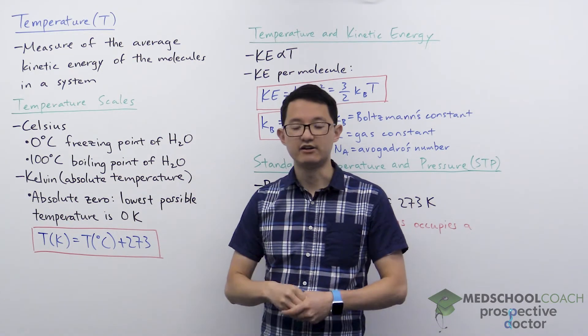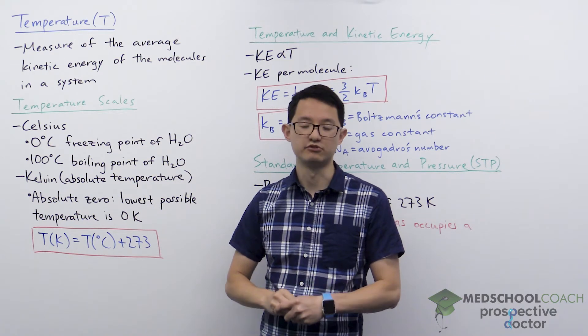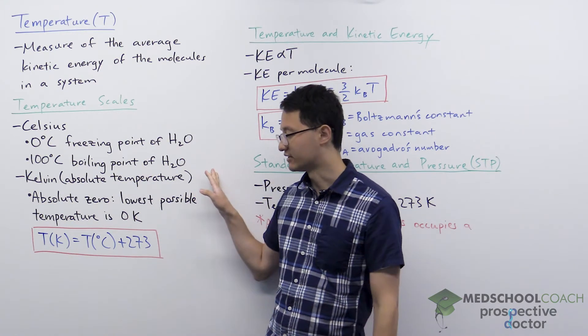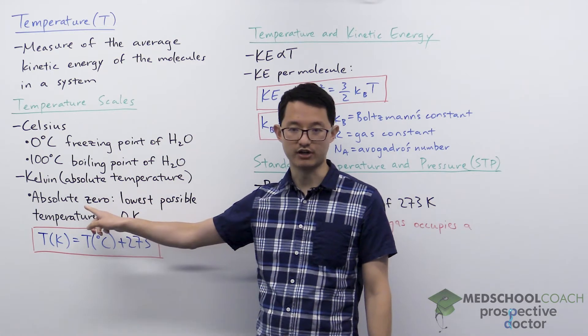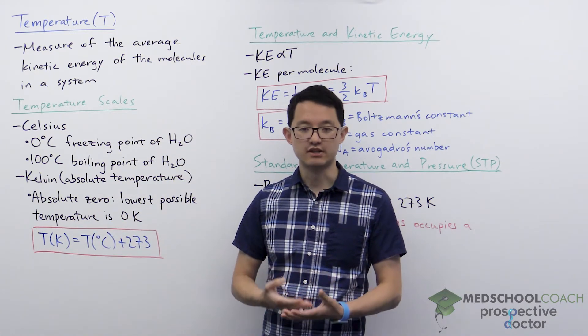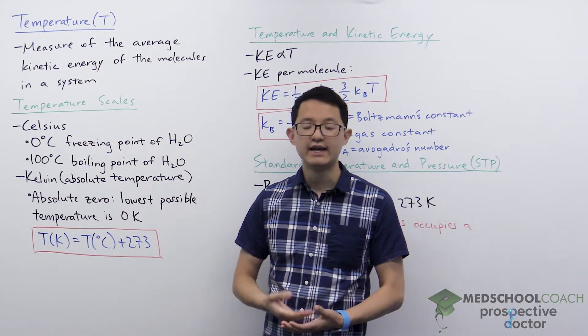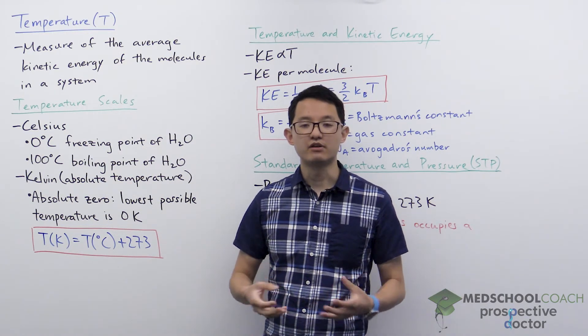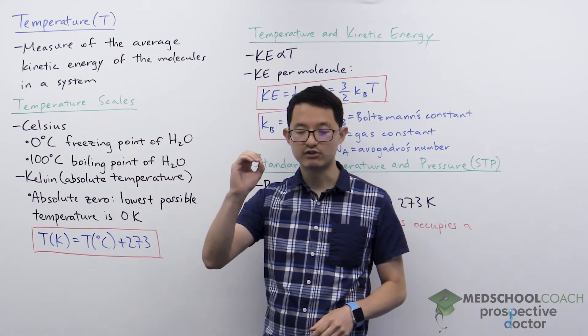The Kelvin scale is also called absolute temperature and that's because the Kelvin scale is defined around absolute zero. Absolute zero is zero Kelvin which is the lowest temperature possible. At zero Kelvin the molecules in our system have zero kinetic energy.